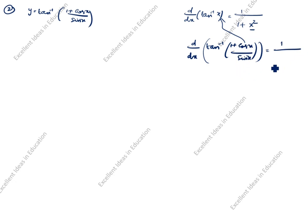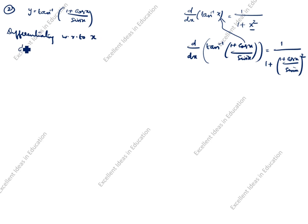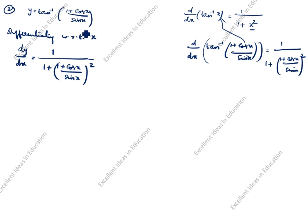The formula is 1 divided by [1 plus (1 plus cos x / sin x) whole square], multiplied by the derivative of (1 plus cos x)/sin x with respect to x. So dy/dx equals 1 divided by [1 plus (1 plus cos x / sin x) squared], times d/dx of (1 plus cos x / sin x).